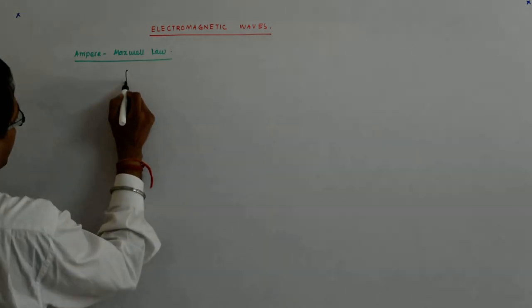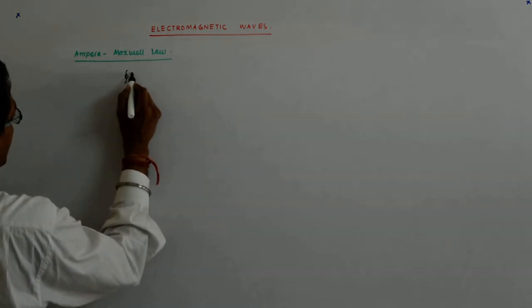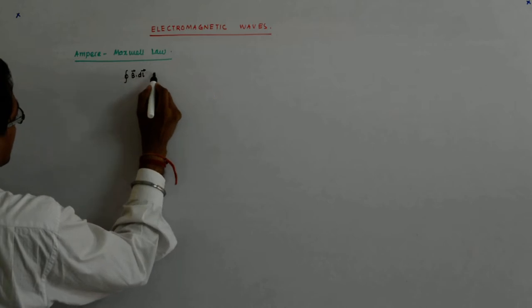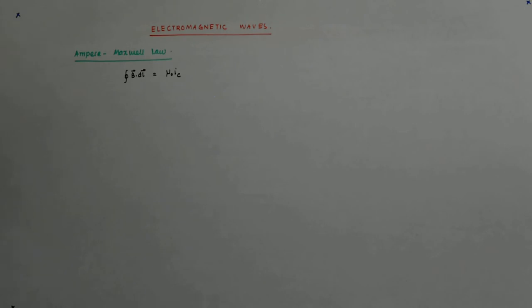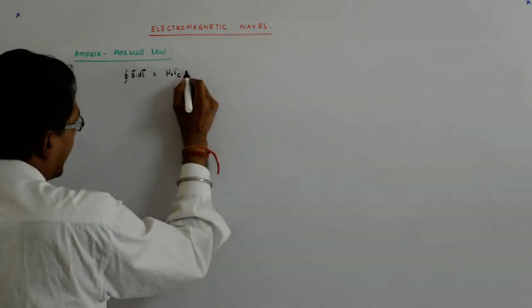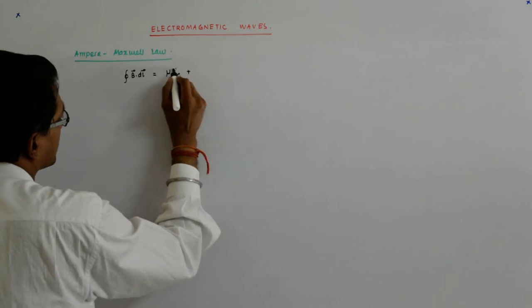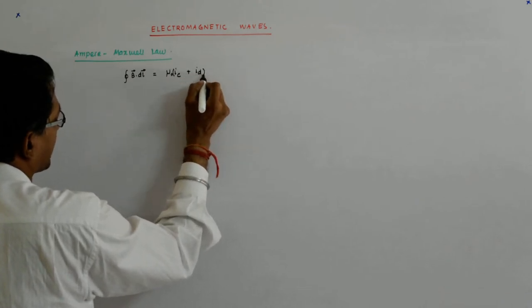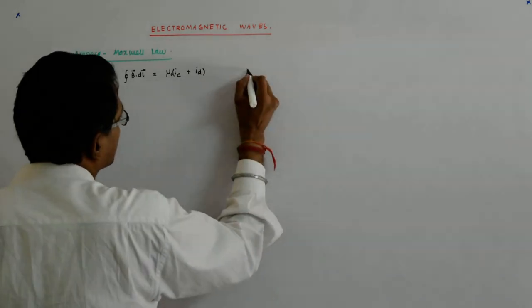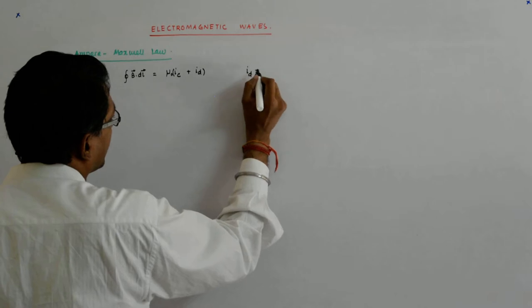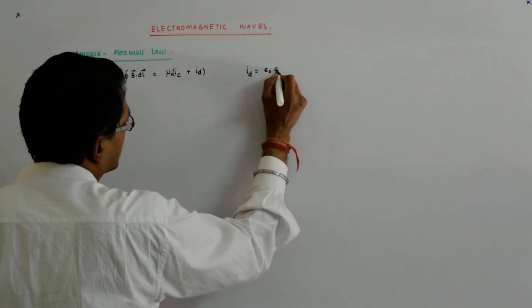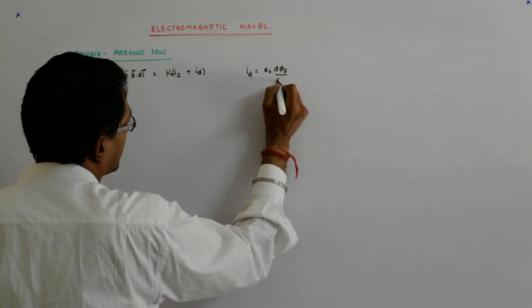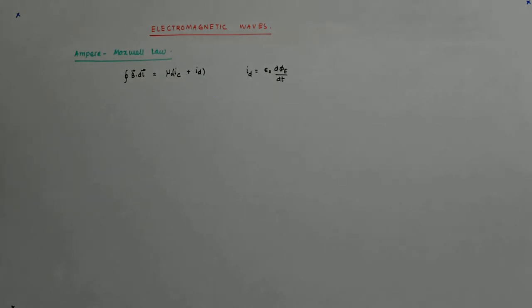This we already know that B dot DL is equal to mu0 i, but he called this as the conduction current and the other current that came into being was the displacement current, given by epsilon 0 D phi E upon DT.